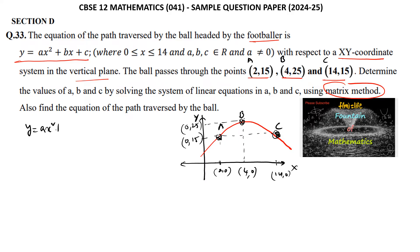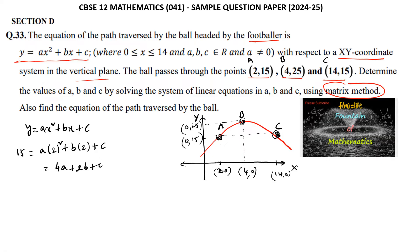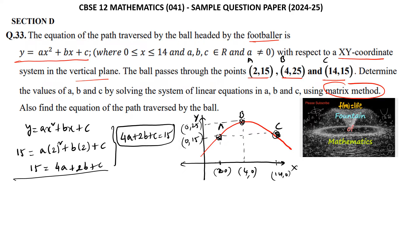The equation is y = ax² + bx + c. When x = 2, y = 15: substituting gives 15 = 4a + 2b + c. When x = 4, y = 25: substituting gives 25 = 16a + 4b + c.